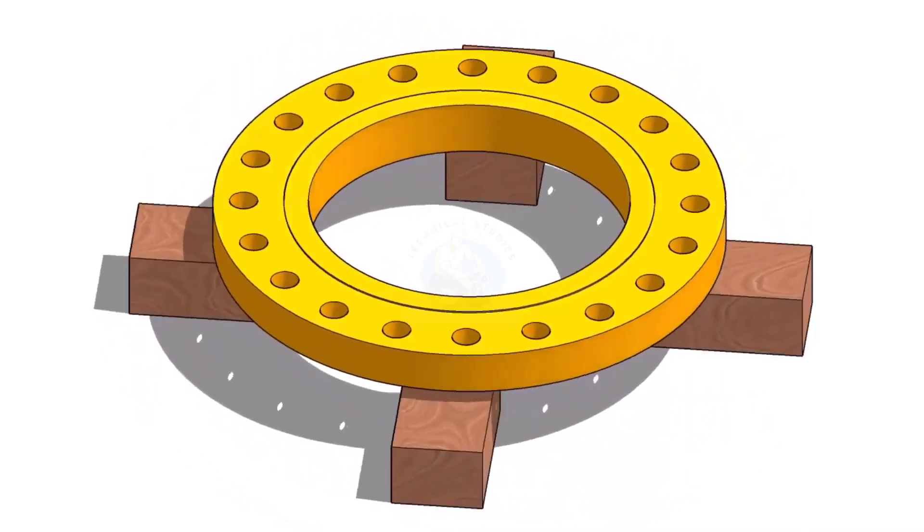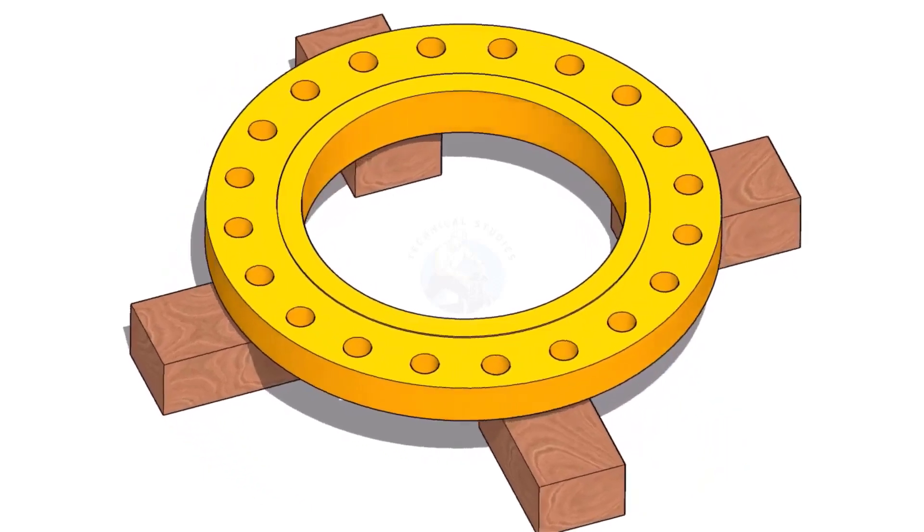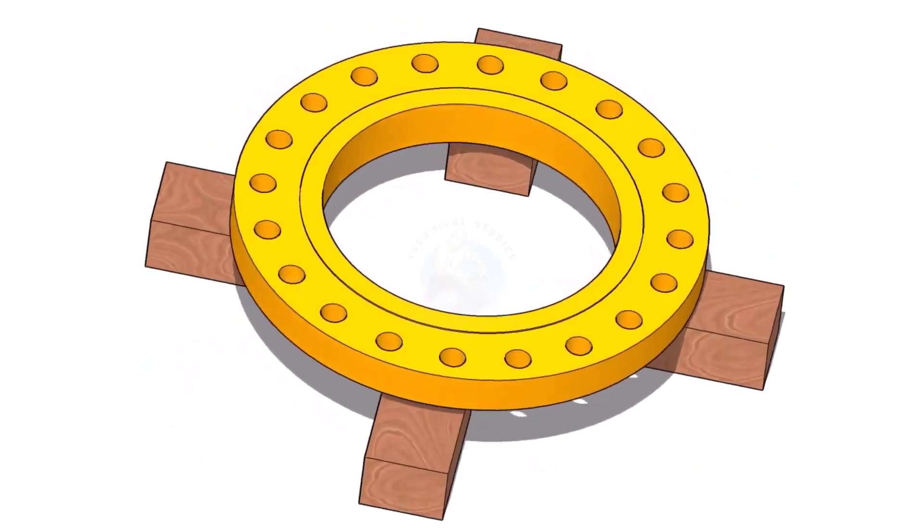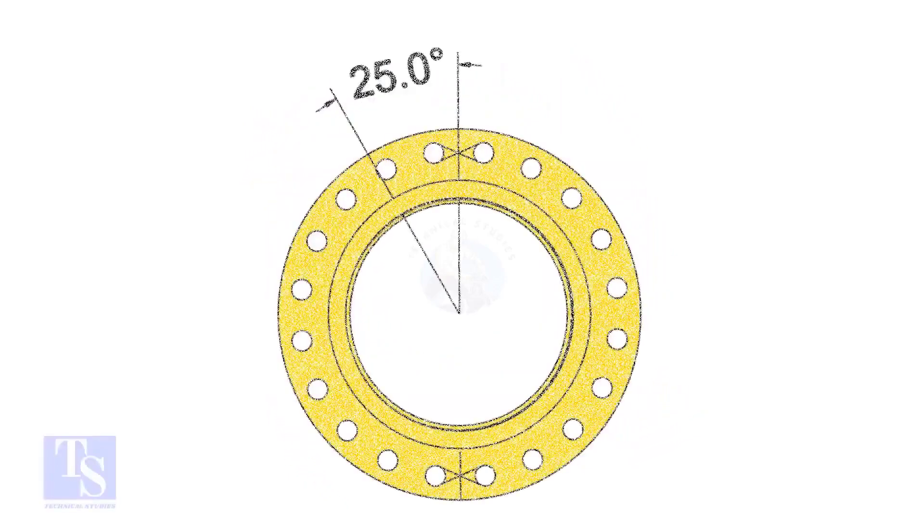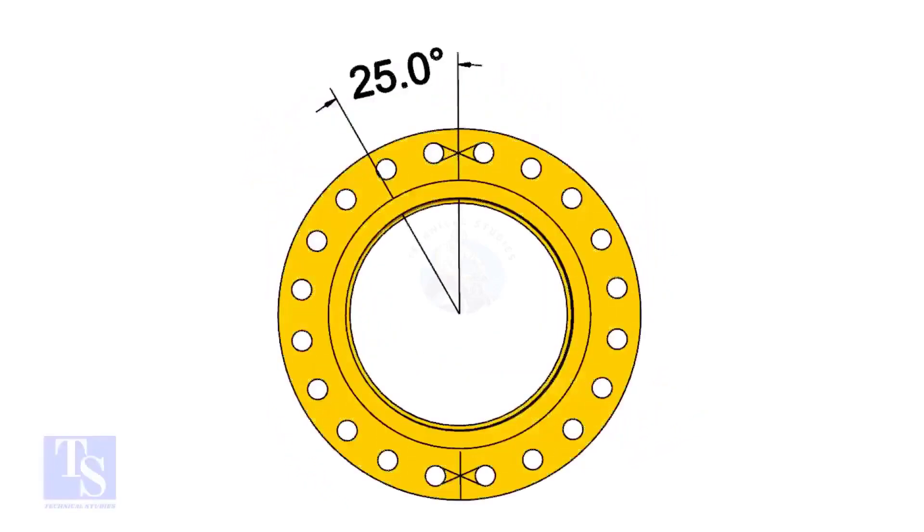I choose a slip on flange for the example, but the calculation and the procedure are the same for all flanges. The pipe and the flange size is 16 inch, and the flange will rotate 25 degrees anti-clockwise.